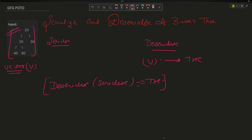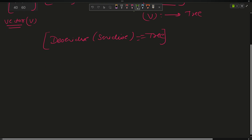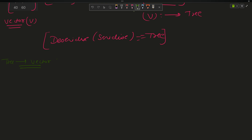The function returns true only when deserialize of serialize gives the exact same tree — this is the only condition you have to satisfy. Now how will we solve it? How can we implement serialize and deserialize? To convert any tree into a vector v, I will use a traversal technique — specifically a pre-order traversal.